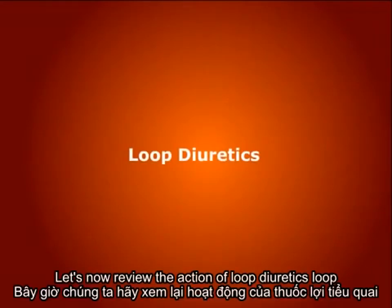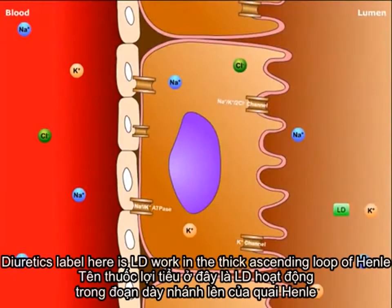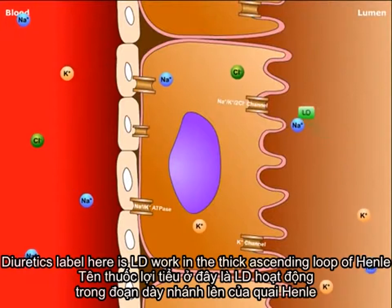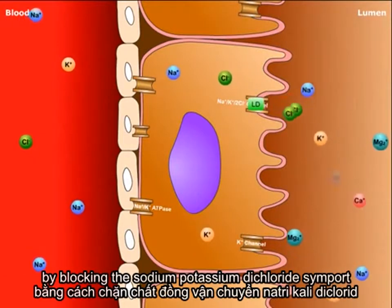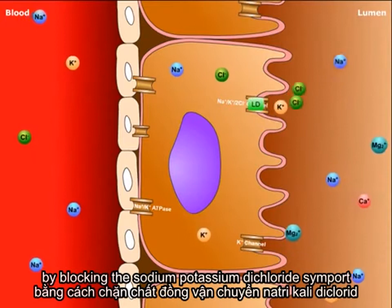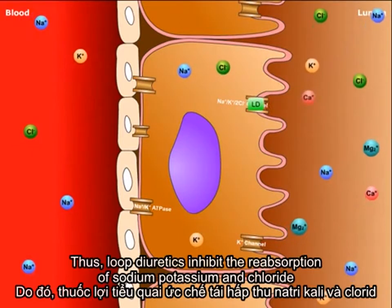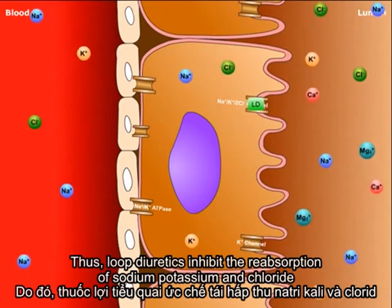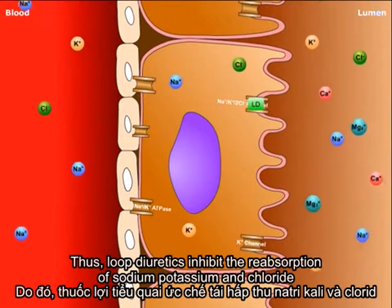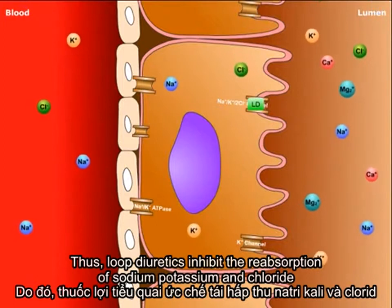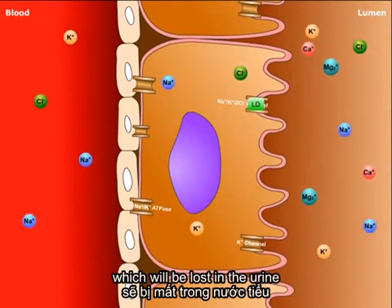Let's now review the action of loop diuretics. Loop diuretics, labeled here as LD, work in the thick ascending loop of Henle by blocking the sodium-potassium-dichloride symport. Thus, loop diuretics inhibit the reabsorption of sodium, potassium, and chloride, which will be lost in the urine.